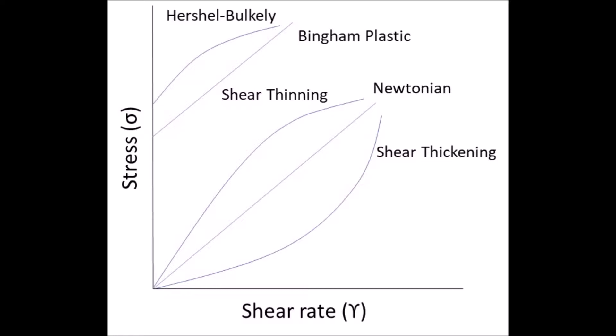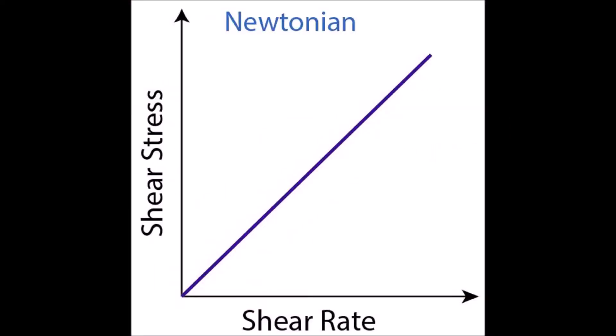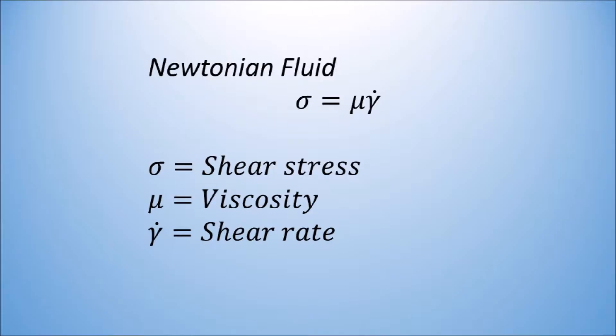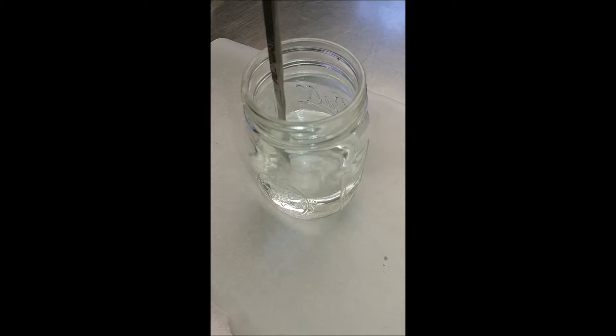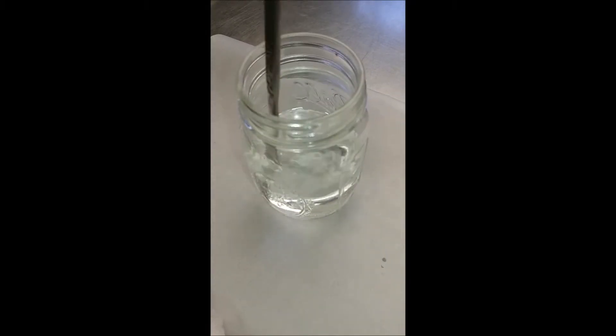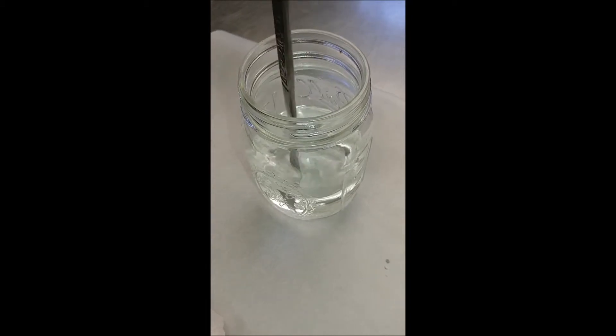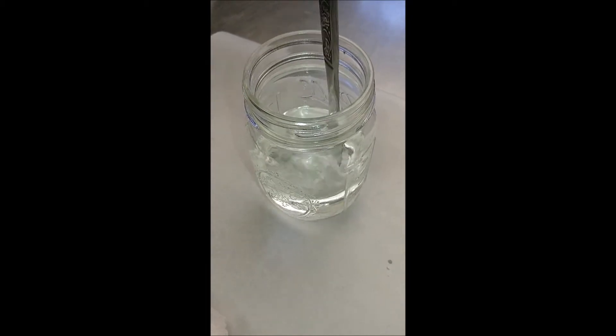Flow behavior is determined by shear stress versus shear rate. Newtonian behavior is considered to have a linear relationship between the shear stress applied and the shear rate experienced by the fluid. The shear stress of a Newtonian fluid is the fluid's viscosity multiplied by the shear rate being experienced by the fluid. This means that the more force you apply to the fluid, the more the fluid will flow.